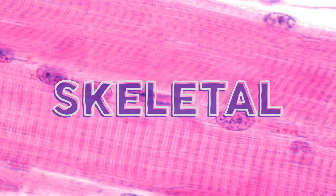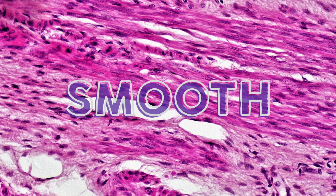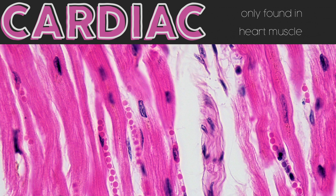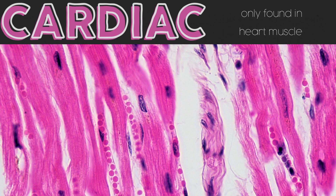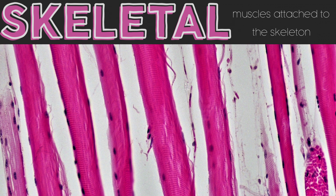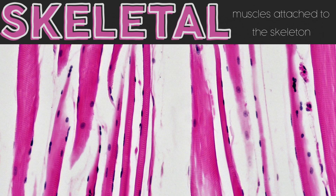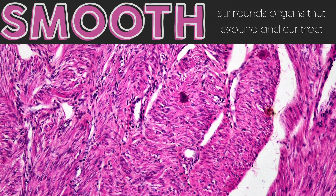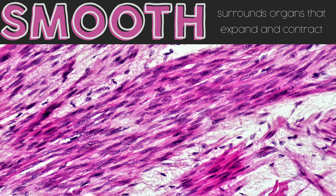Skeletal muscle contracts forcefully along a set path, so it has big bundles of parallel fibers. Meanwhile, smooth muscle just needs to squeeze, so it's organized into broad sheaths. Remember that form influences function. There are only three types of muscle: cardiac muscle only in your heart; skeletal muscle in all the muscles you're used to seeing — biceps, quads, etc.; and smooth muscle which surrounds different organs that need to constrict and expand, like your blood vessels, sphincters, or uterus.